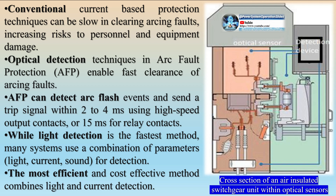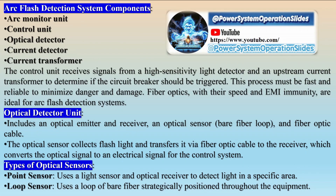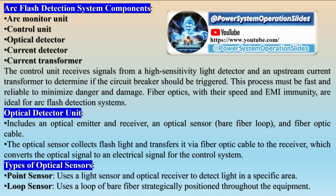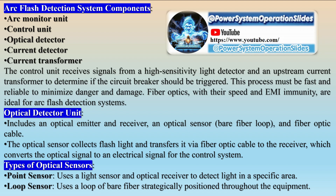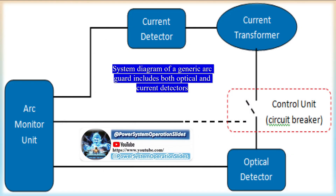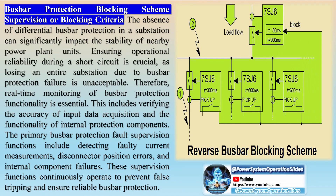Regarding special busbar arrangement components and their protection: end fault protection is crucial for protecting zones located between a circuit breaker and a current transformer when the CB is open. It handles small zone faults that the busbar protection (BBP) cannot clear on its own, sending a trip signal to the line distance protection at the remote end to eliminate the remaining fault. The section between the CT and CB is termed the dead zone. End fault protection is activated only when the CB is open; when the CB is closed, this function is not in play, allowing for fast fault clarification.